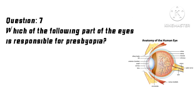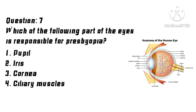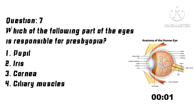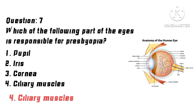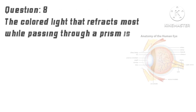Question 7: Which part of the eye is responsible for presbyopia? Options: 1. Pupil, 2. Iris, 3. Cornea, 4. Ciliary muscles. Correct answer: 4. Ciliary muscles.